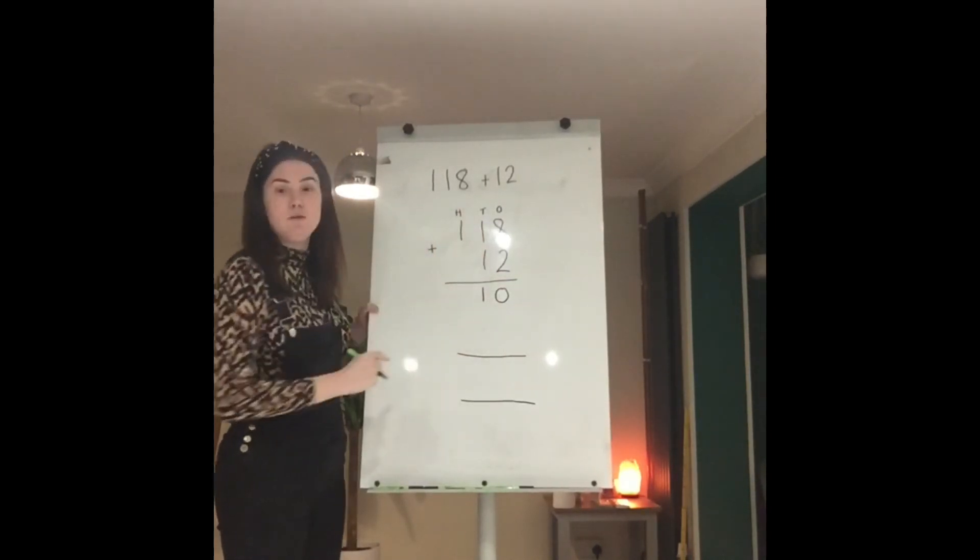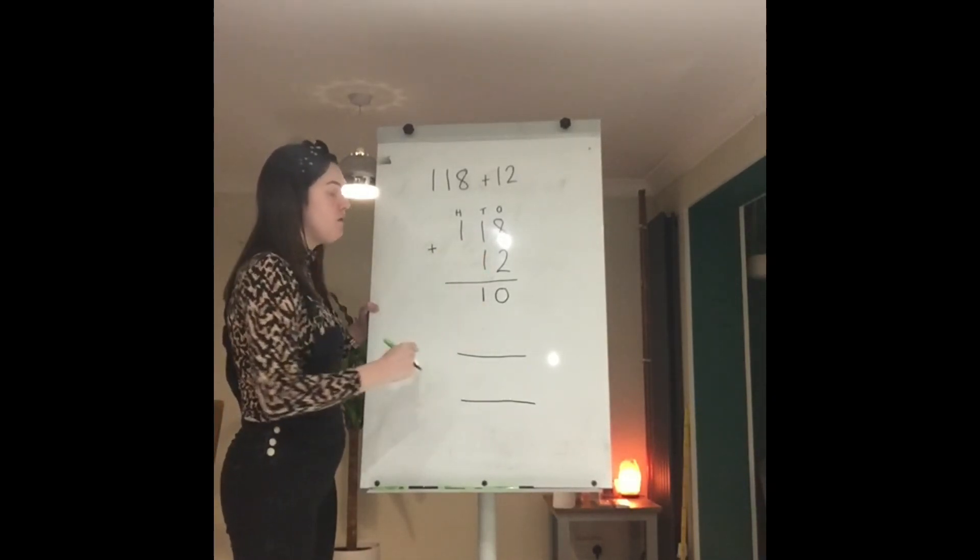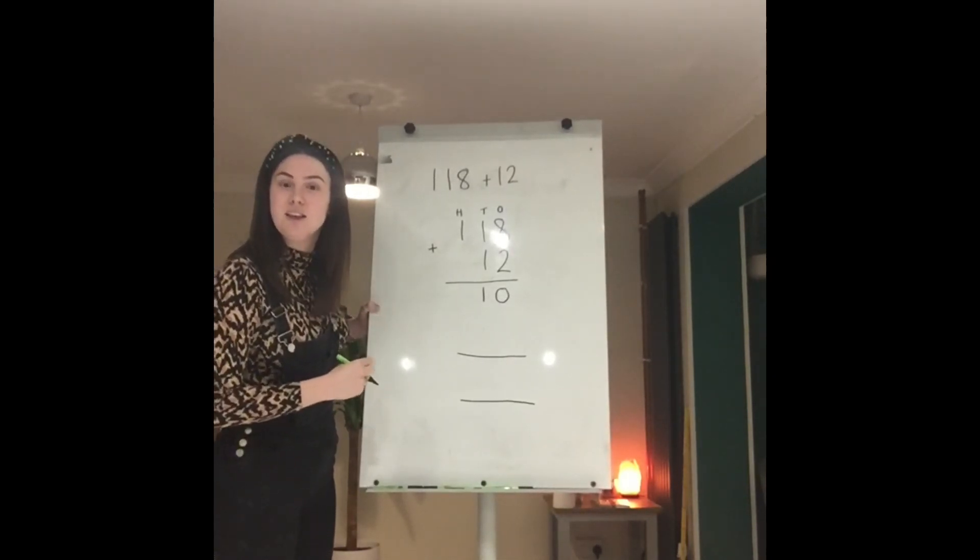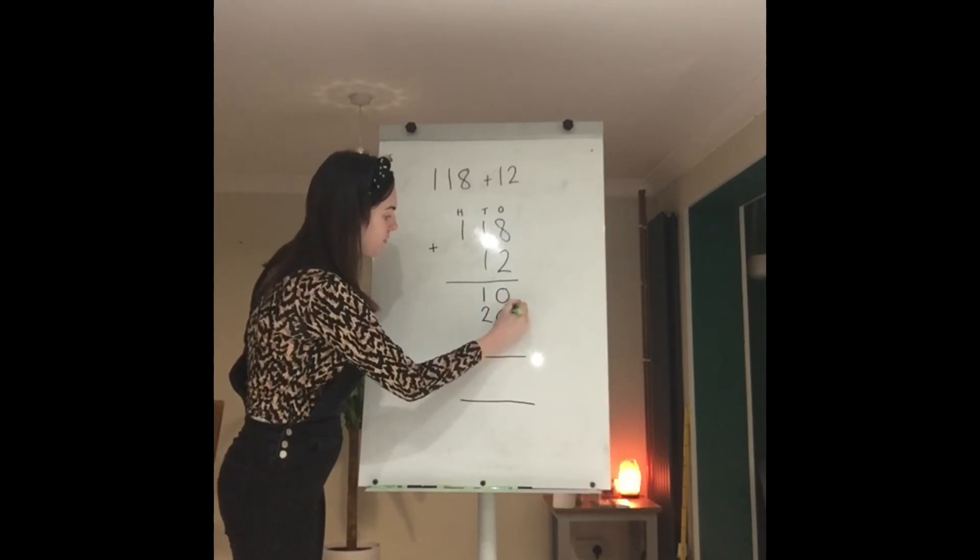Now we need to move on to adding our tens and we have our 10 in 18 and our 10 in 12. We're really good at counting in 10, so 10 and 10 is 20. Well done, fantastic job.